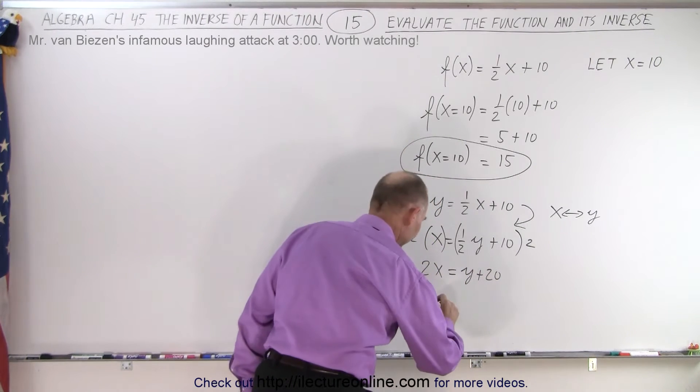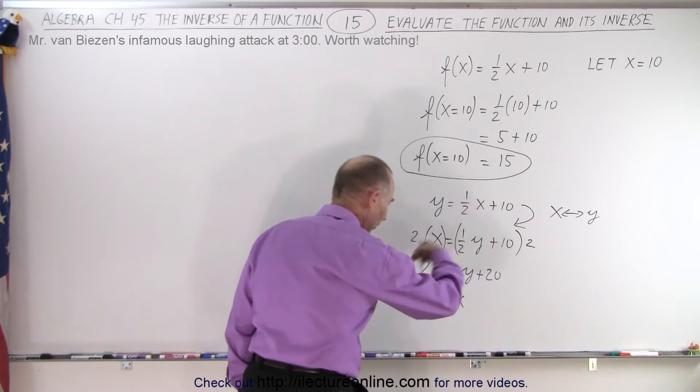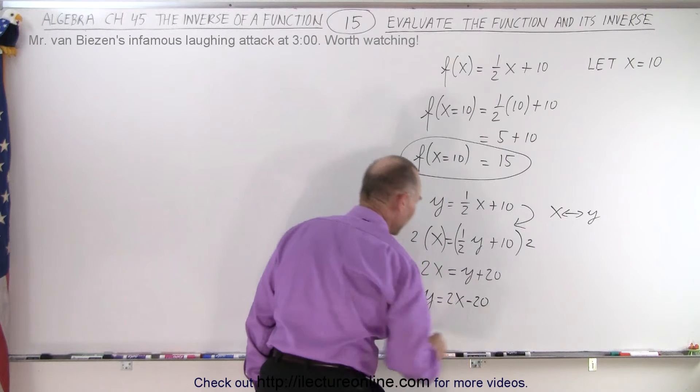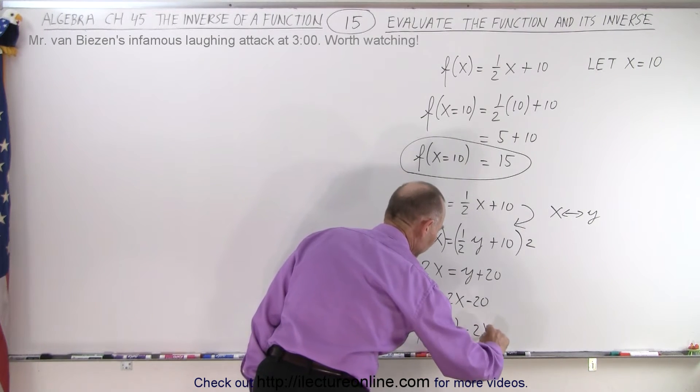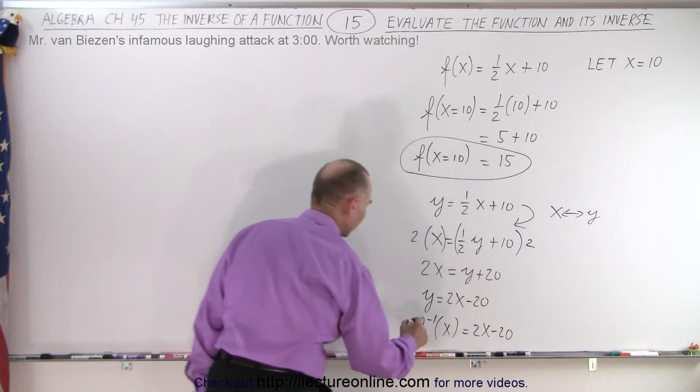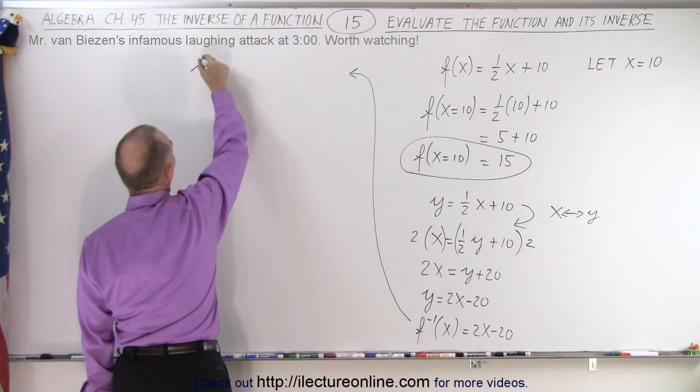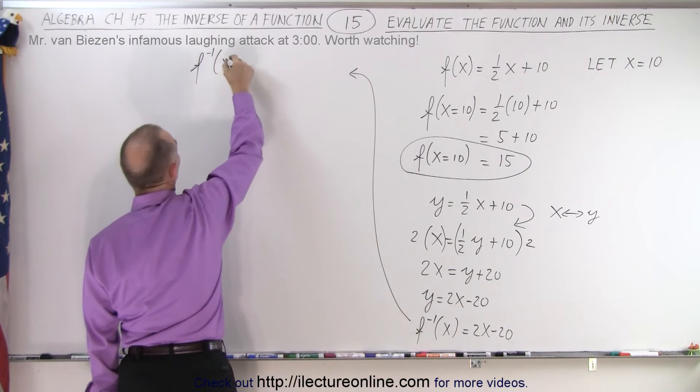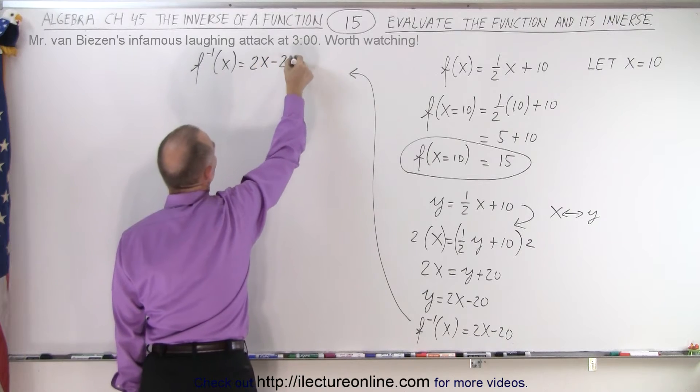Now we can write this as y equals 2x, moving the 20 across the other side becomes minus 20. In other words, the inverse of the function is equal to 2x minus 20. Let's come up here and rewrite the inverse of the function. The inverse of the function x is equal to 2x minus 20.